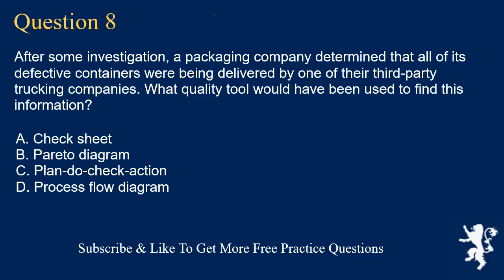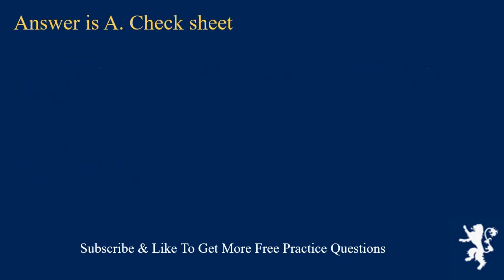Question 8. After some investigation, a packaging company determined that all of its defective containers were being delivered by one of their third-party trucking companies. What quality tool would have been used to find this information? A. Check sheet. B. Pareto diagram. C. Plan do check action. D. Process flow diagram. Answer is A. Check sheet.